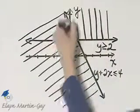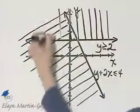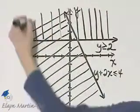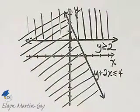Now the solution region for this system is where the two shaded regions intersect. So where do the two shaded regions intersect?